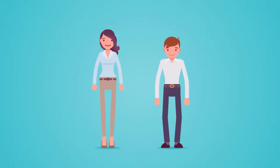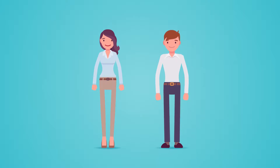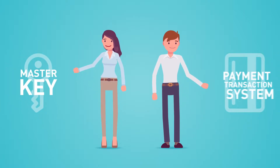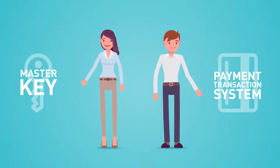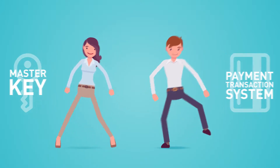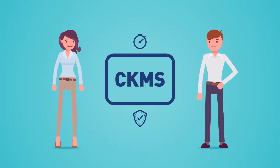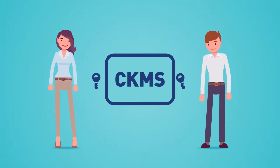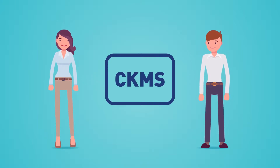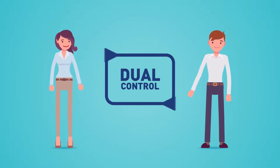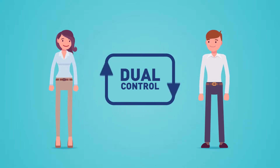Kate and Chris are key custodians, and they need to create a master key for a brand new payment transaction system. They use CKMS to make the process fast and secure. Two key custodians are needed because this is a highly security-sensitive operation, which requires dual control to comply with industry regulations.